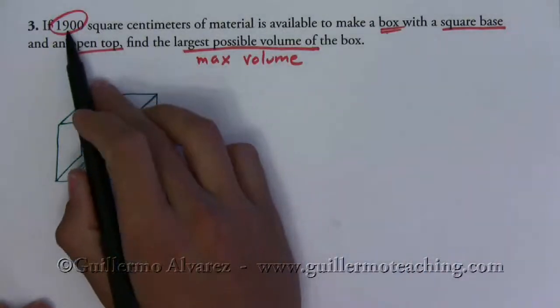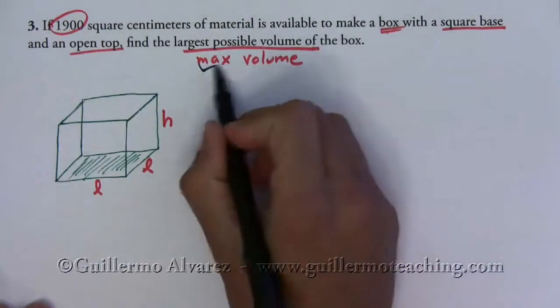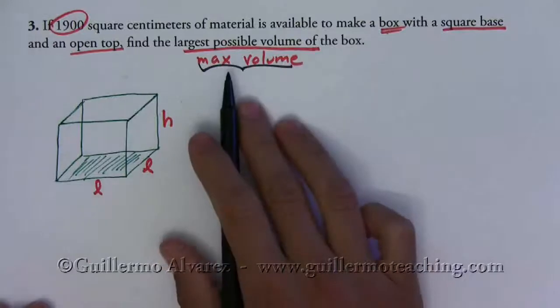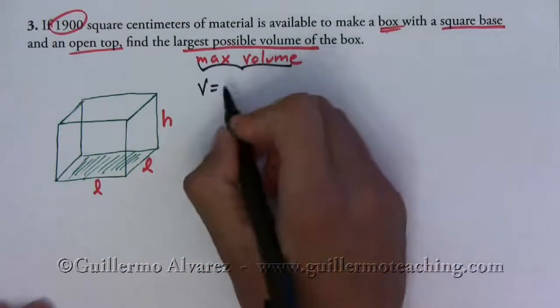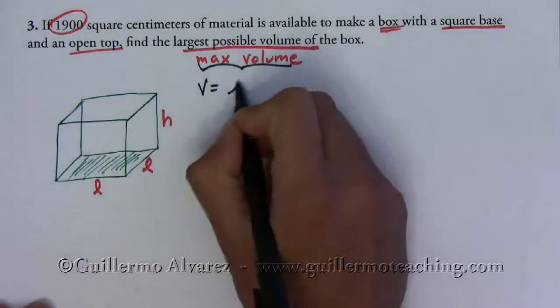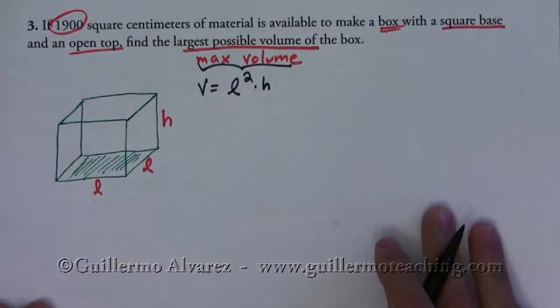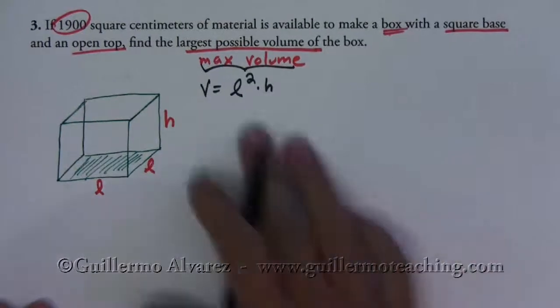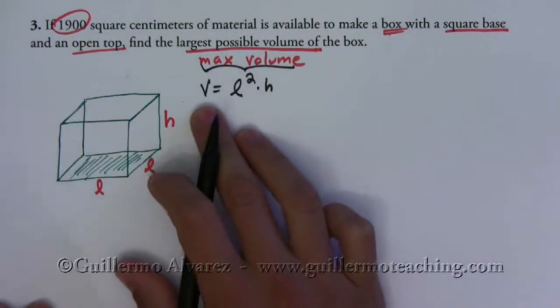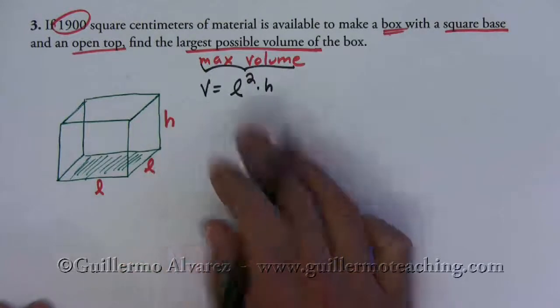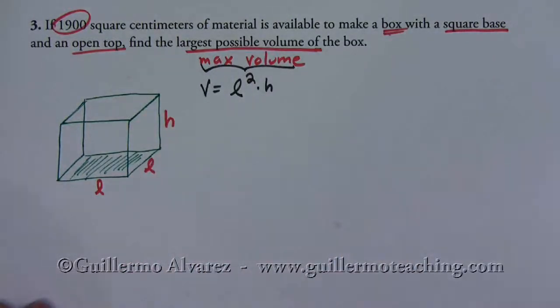We notice that we need to write down a formula for the volume since that's what we're trying to maximize. So the volume of this box is going to be l squared times h. And then to find the maximum we need to find the derivative of the volume, but the problem as usual is that we have two variables.